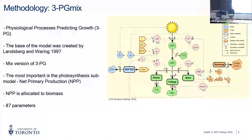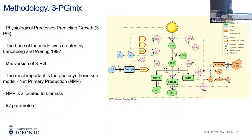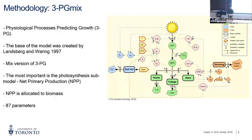The model has around 87 parameters, including climate parameters like temperature and precipitation. Most of them are focused on species — for example, quantum efficiency and the allocation of NPP to roots or foliage. The model uses these inputs to allocate carbon to the stem, so DBH and tree height are calculated based on biomass.